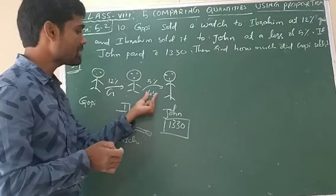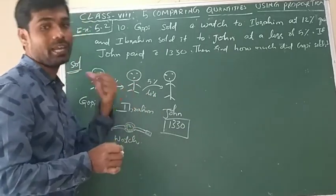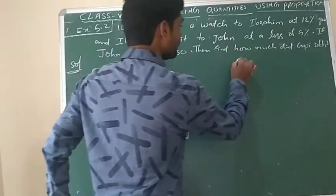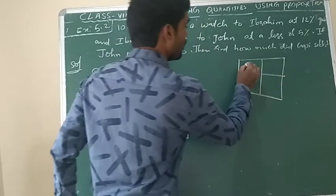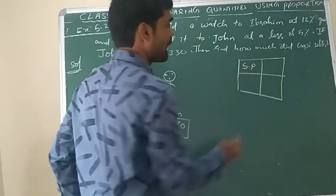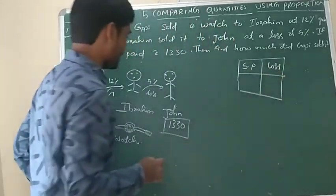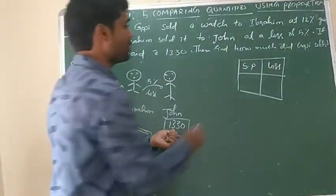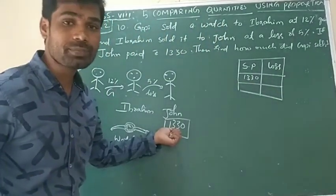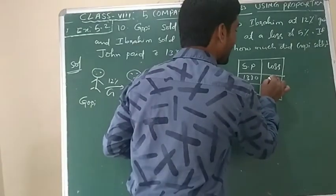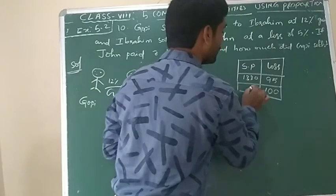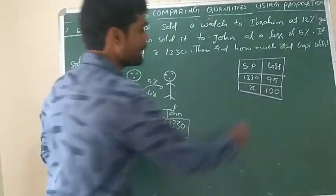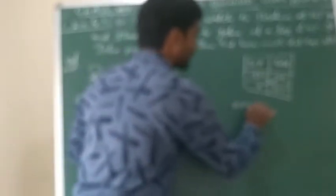Let us find what is 100% of the John-Ibrahim transaction, then we can say that is the answer. Let us take a simple table: cost price, selling price, and loss. Selling price is 1330 rupees. Loss percentage is 5%, so it is 100 minus 5, which is 95. We want the cost price, which is 100 — unknown. So: x × 95 = 1330 × 100, therefore x = 1330 × 100 / 95.